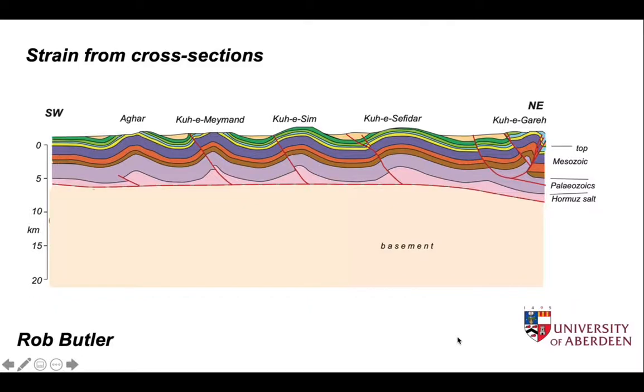In large-scale studies of deformation associated with crustal shortening in mountain belts and with stretching of the upper crust during rifting, it's common to estimate strain using cross-sections.